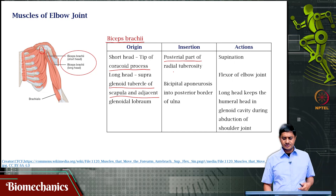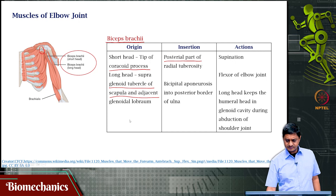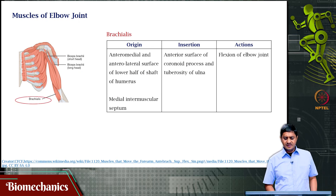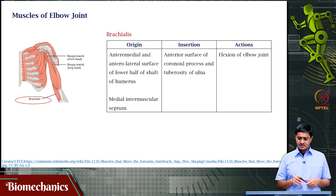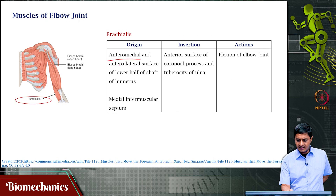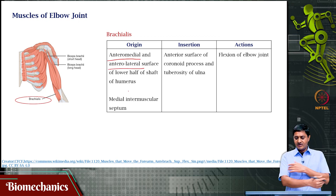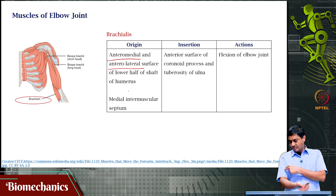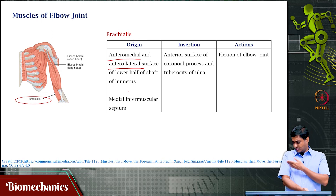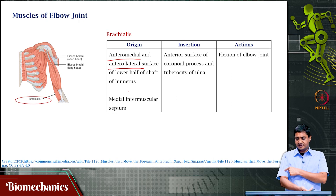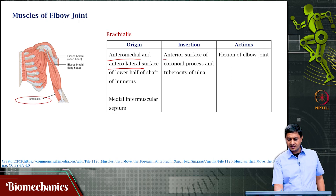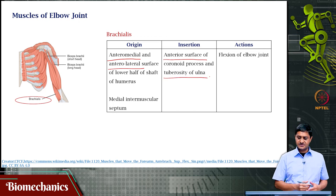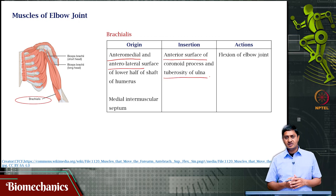We will come back to that question of independent supination and flexion in a future video. Then there is the brachialis, which originates on the anteromedial and anterolateral surface of the lower half of the shaft of the humerus. Its insertion is at the ulnar tuberosity. Its function is elbow flexion.